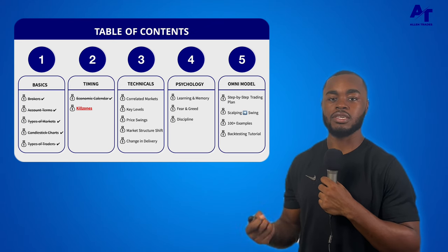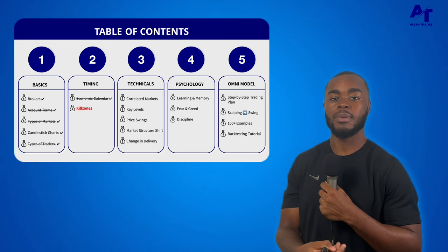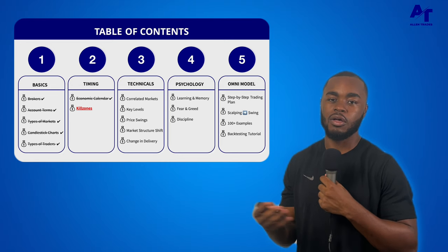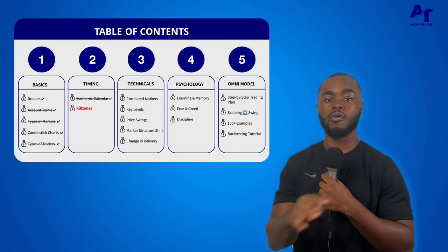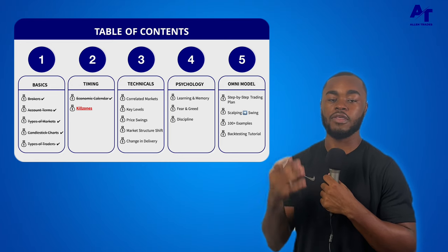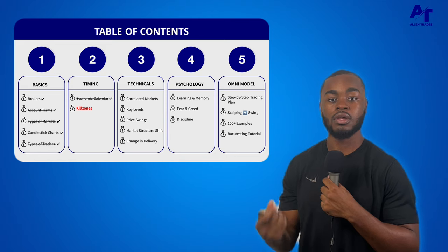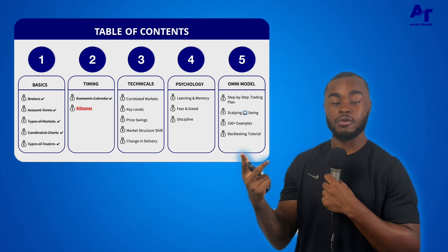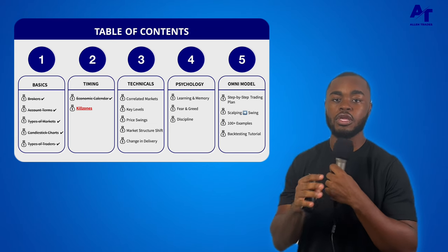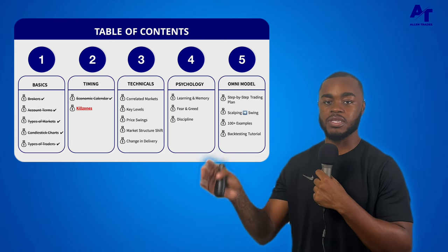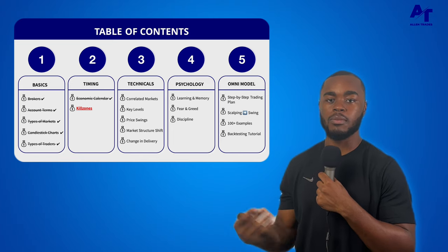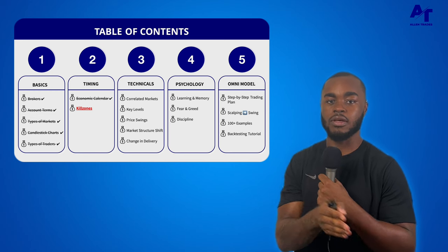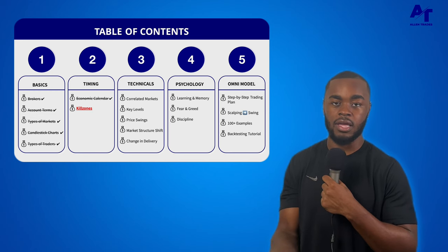We just went over the optimal times of the week that you want to be looking at your charts and potentially taking trades. Now let's talk about the optimal times of the day that you want to be entering those trades, and we do that with sessions also known as kill zones. We're going to go over the four main markets this course covers: currencies, commodities, index futures, and bonds. Each one has very specific kill zones, and while there will be some overlap, there are slight differences for each individual market.